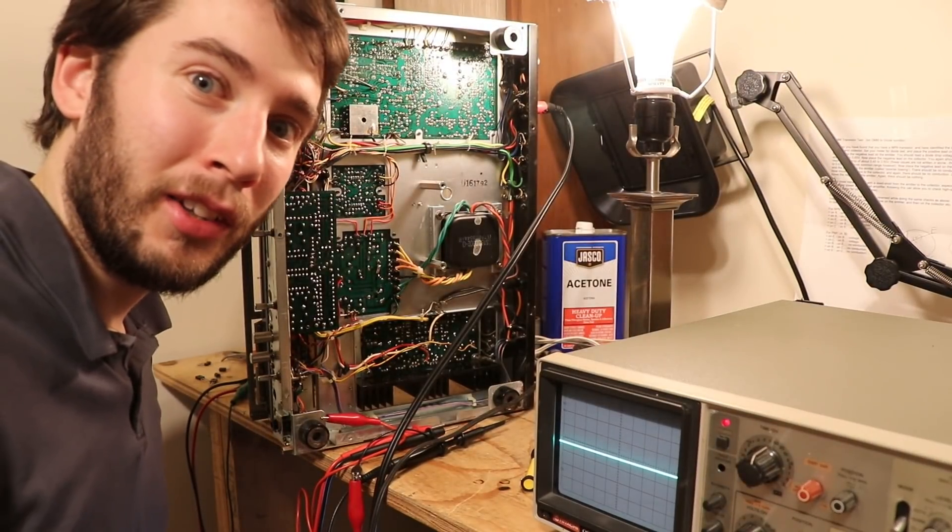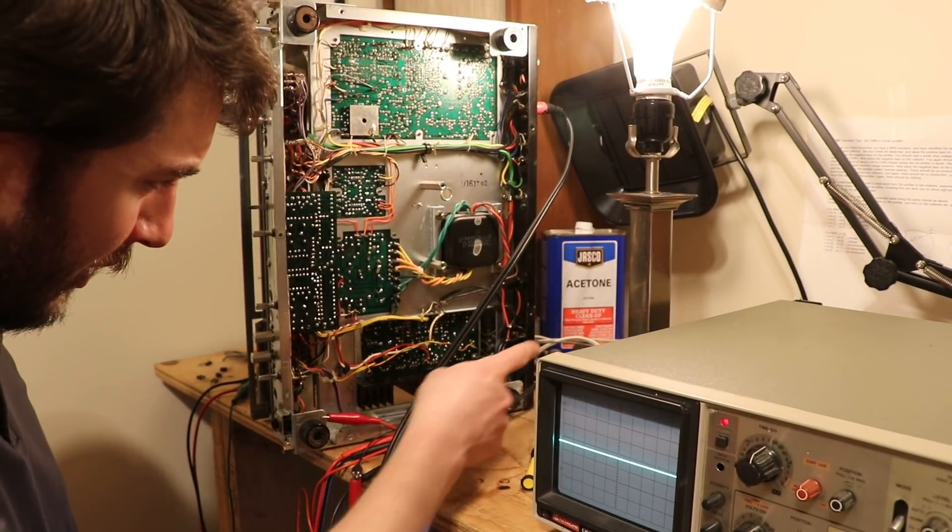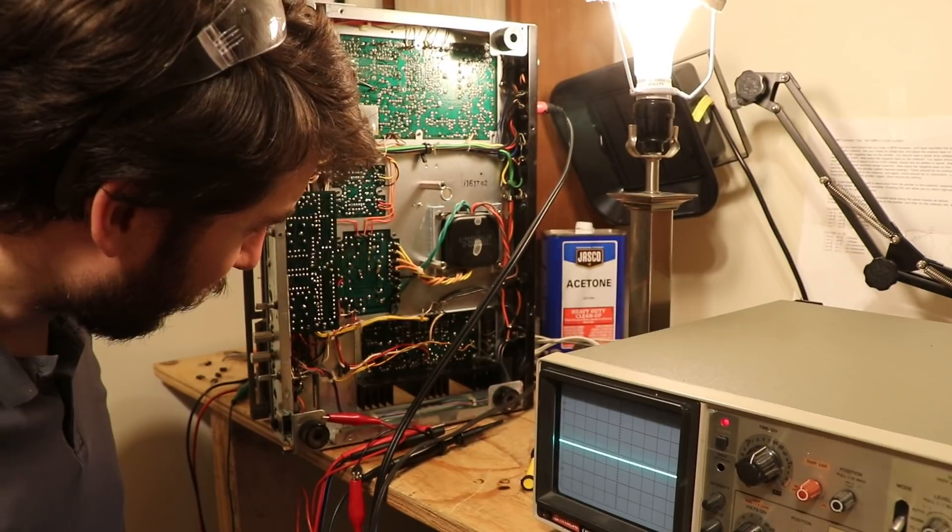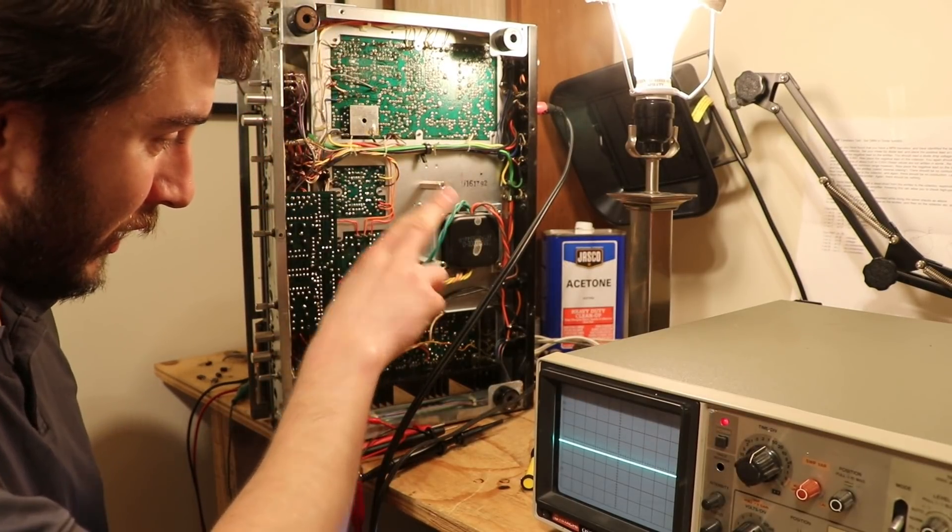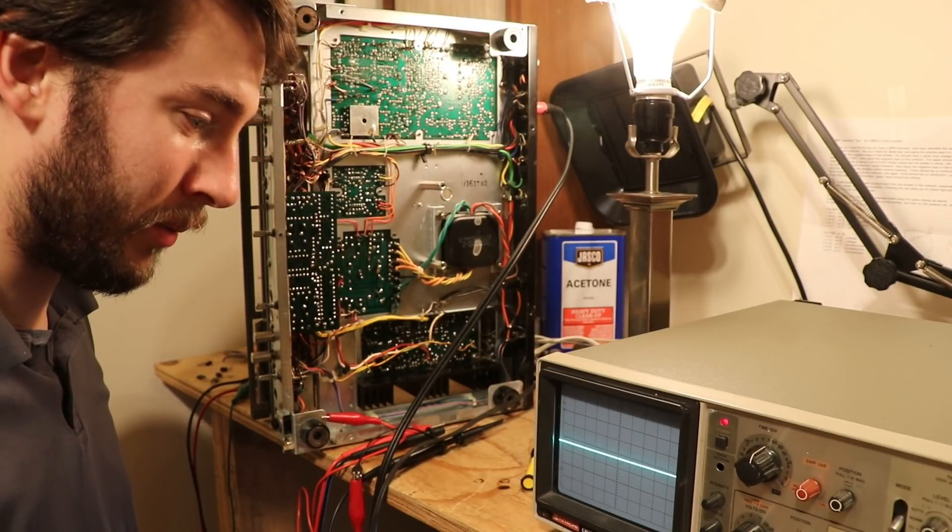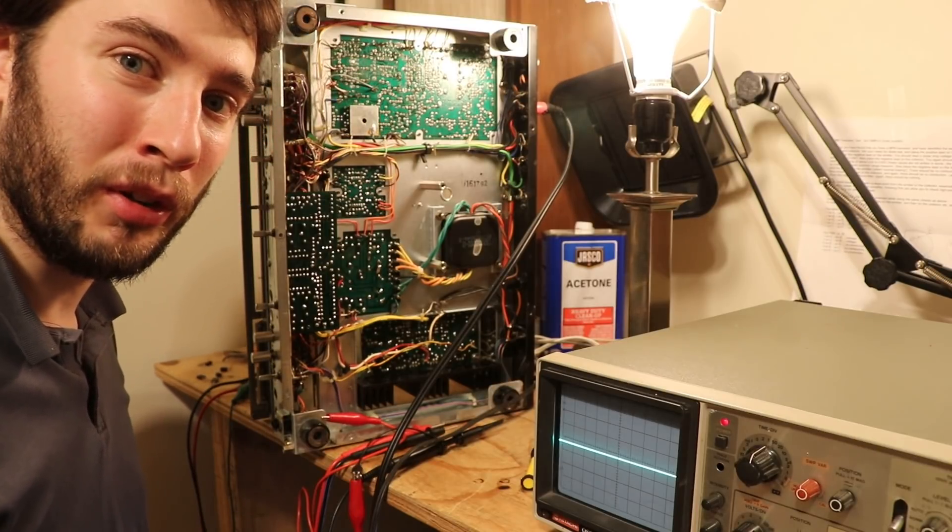and now when I turn the receiver on on the dim bulb, we get a nice, bright light bulb, which means there is likely a shorted output in here somewhere. Power from this thing is going directly to ground. It's bad.